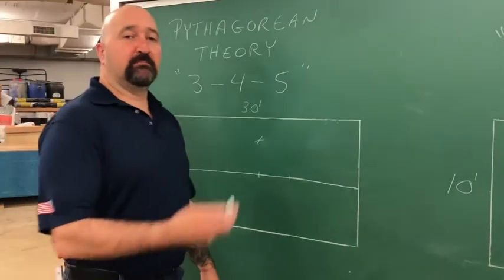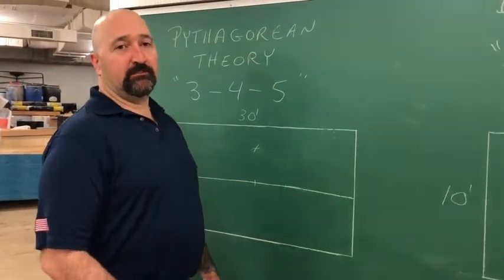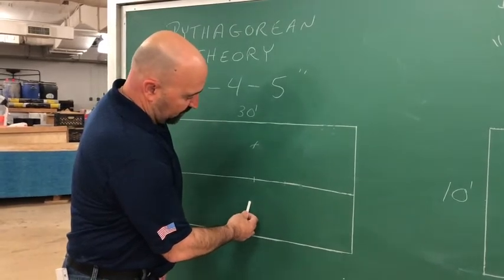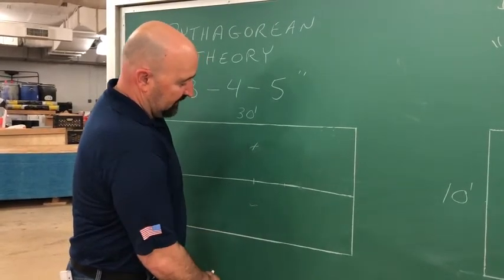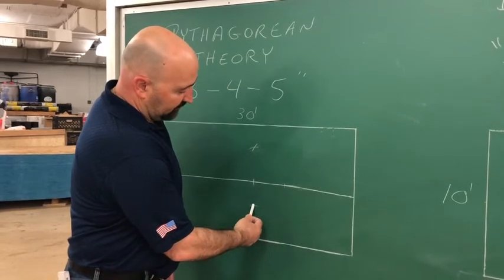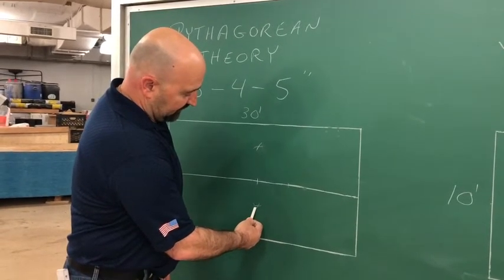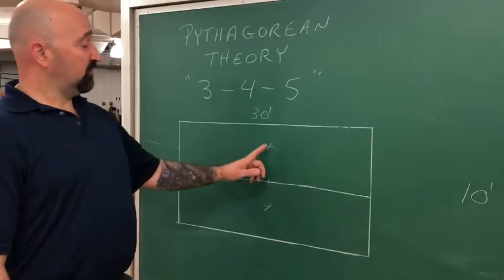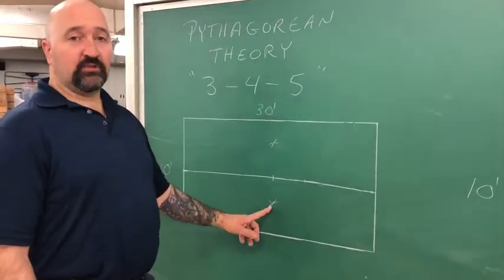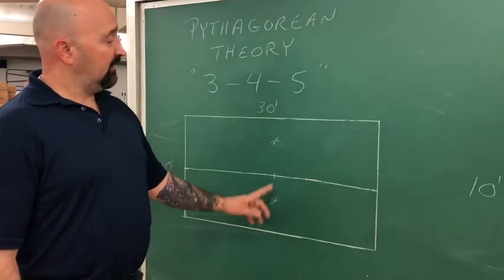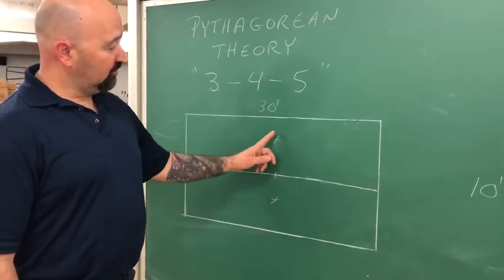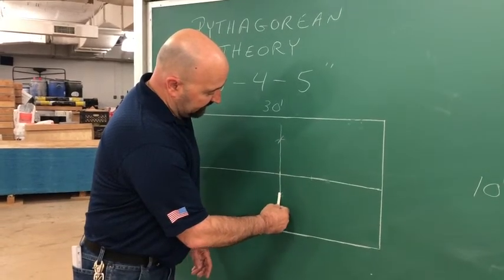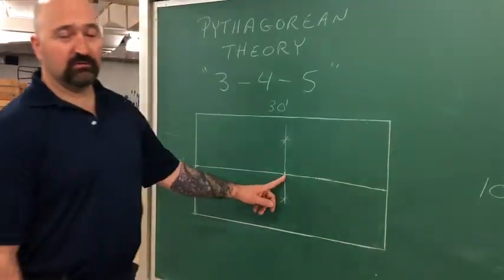Now you're going to do the same process below the control line using the same numbers. You're going to go down 3 feet, swing an arc, go back to your 4 mark, use your 5 and swing the other arc. Once you establish both of these marks, you're going to take a straight edge or chalk line and connect these two, making sure that your line hits your center control line.